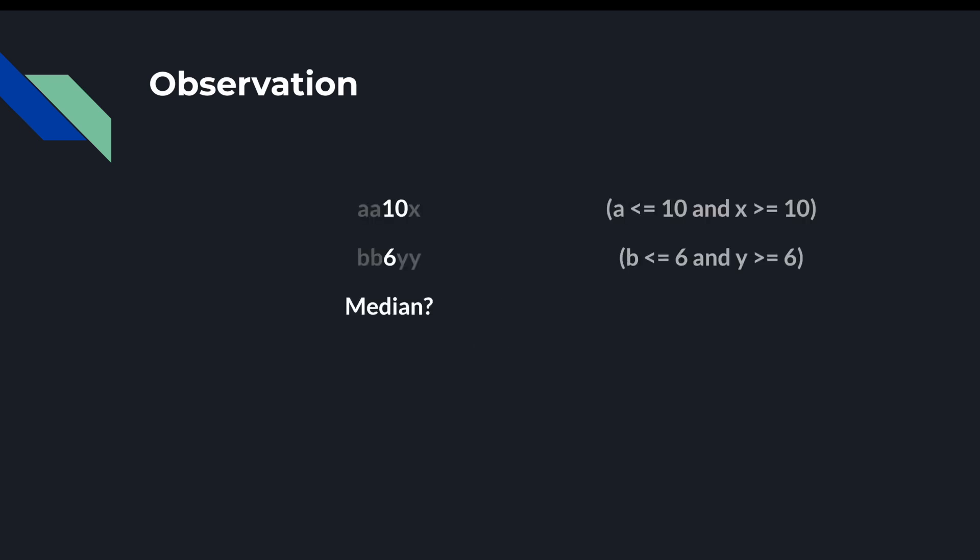Now let's say we have two arrays like so instead. Can we say anything definitively about the median in this case? The answer is no. Because 10 is larger than 6, we can no longer safely say that the A's will be the first 4 elements.